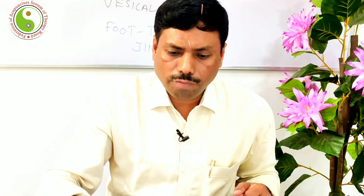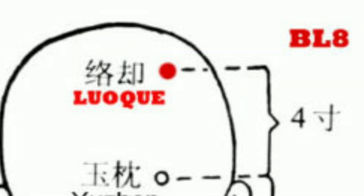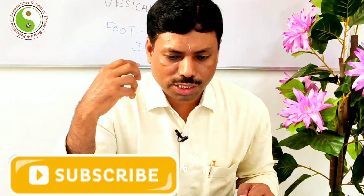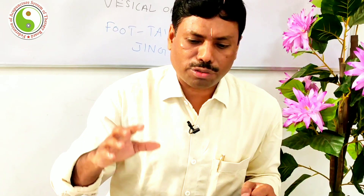UB7, Tongtian, is really good to treat various nose-related disorders. This point covers the olfactory bulb, where anosmia conditions can be treated. UB8, Luoque — 1.5 cun posterior to UB7 — is a very good point to treat for the pineal gland. The pineal gland is related to the third eye. This is a very good point to improve and induce natural sleep, since it induces melatonin hormone, which is essential for normal sleep.